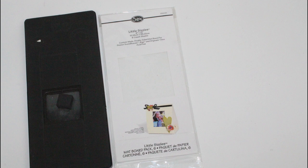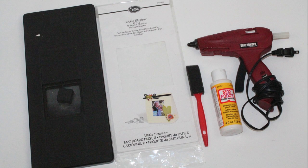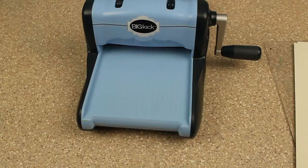The first thing you'll need is Eileen's box die, a mat board by Sizzix, Mod Podge and a foam brush, a hot glue gun, and six three by three Instagram pictures per cube.